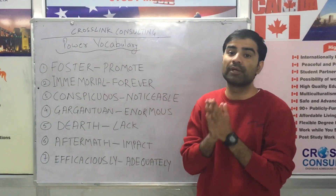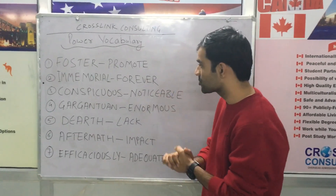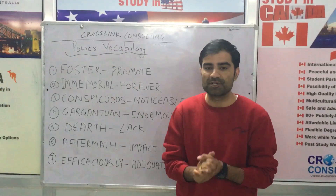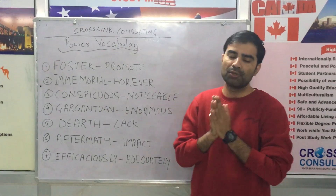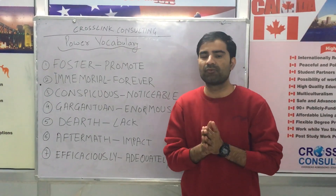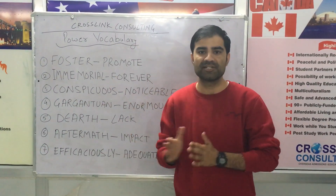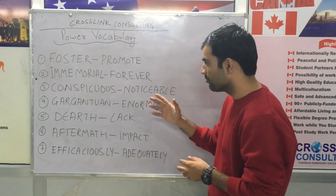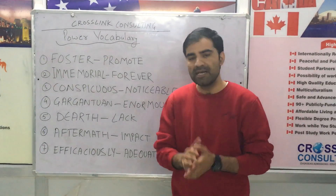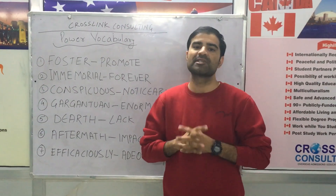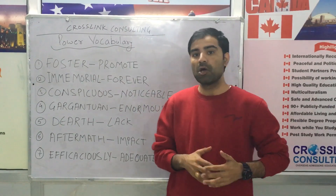The third word is 'conspicuous.' Conspicuous is a word you can use in place of 'essential,' 'evident,' or 'noticeable.' The fourth word is 'gargantuan.' Gargantuan is a word you can use in place of 'colossal,' 'huge,' 'massive,' or 'enormous.'